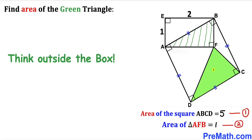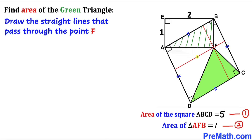Since we are interested in finding the area of the green shaded triangle, we are going to think outside the box. We draw two straight lines passing through point F — one parallel to line AB and one parallel to line BC — and as a result we get four smaller rectangles inside square ABCD.